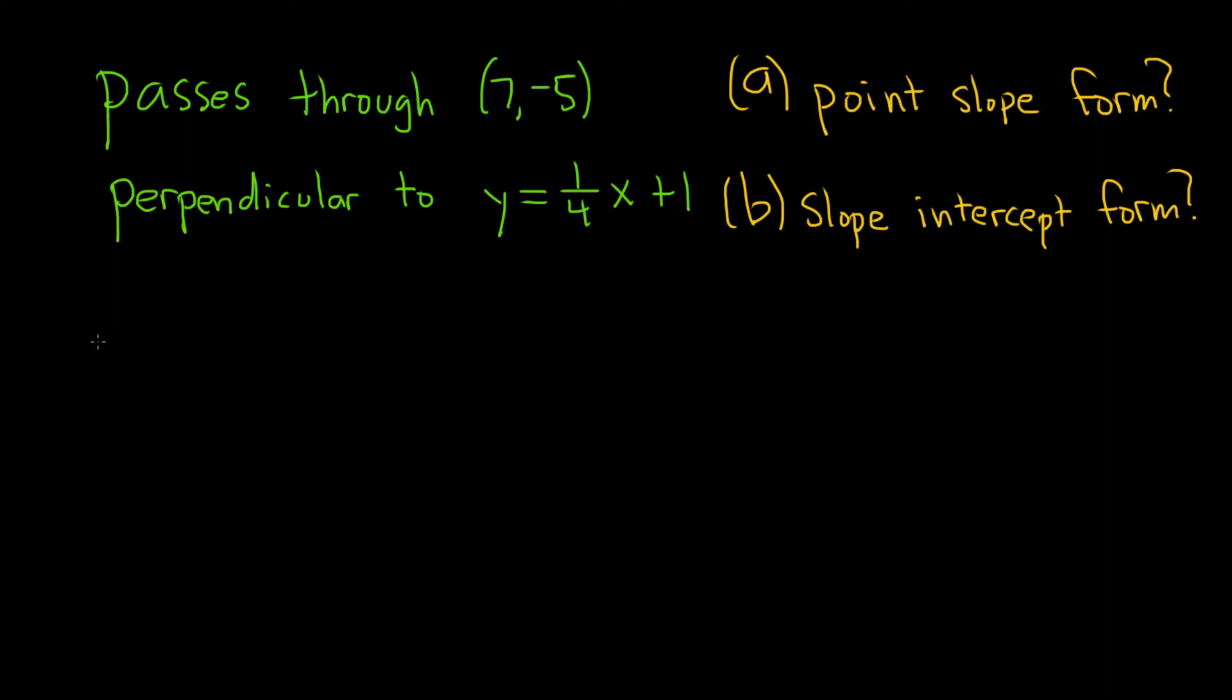In this problem, we're being asked to find the equation of a line that passes through this point and is perpendicular to this line. In part A, we want to write it in point-slope form, and in part B, we want to write it in slope-intercept form.